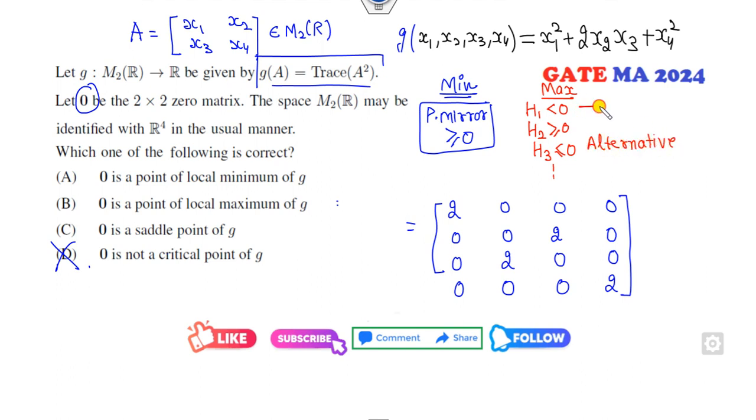And all those other cases we call as the saddle point. Now look at that, what is the first principal minor? 2, which is greater than 0, so that means the maximum condition is ruled out. So 0 is the point of the maxima, cancel out. What is my H2, second principal minor? That is the determinant is 0, which again satisfies this property.